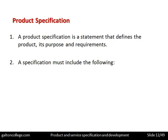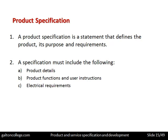A specification should include product details based on research and customer feedback, its functions, and user instructions. If it's a technical piece of equipment for the home, it should come with clear instructions and be easy to use. It could be electrical, so the specification should cover its electrical requirements and any associated issues.